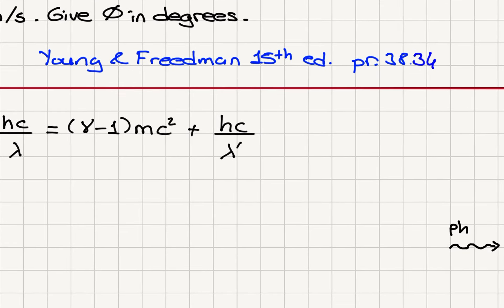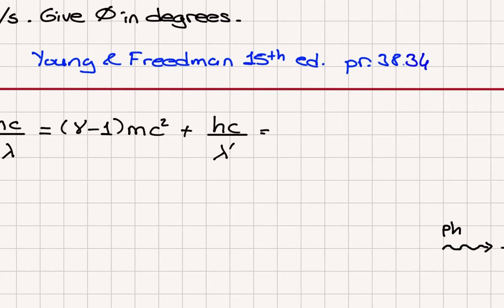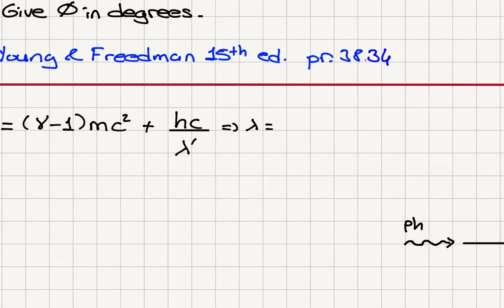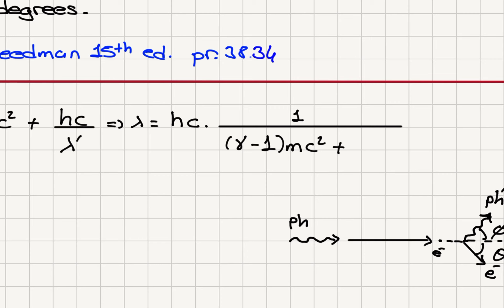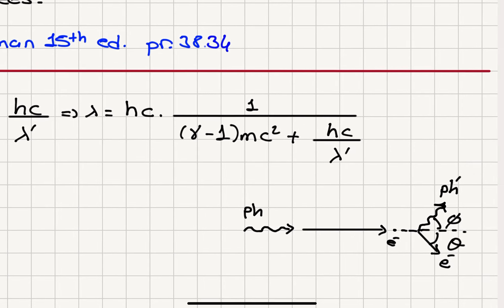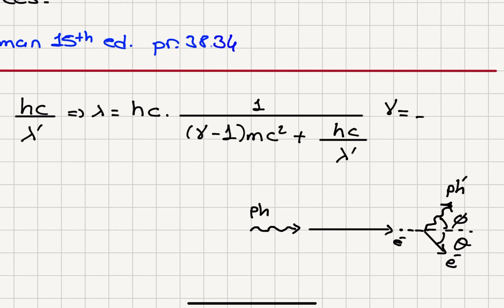Taking the reciprocal of both sides, lambda is equal to hc times one over the quantity: gamma minus one times mc squared, plus hc over lambda prime. Gamma here is our relativistic correction factor — it is one over the square root of one minus v squared over c squared.